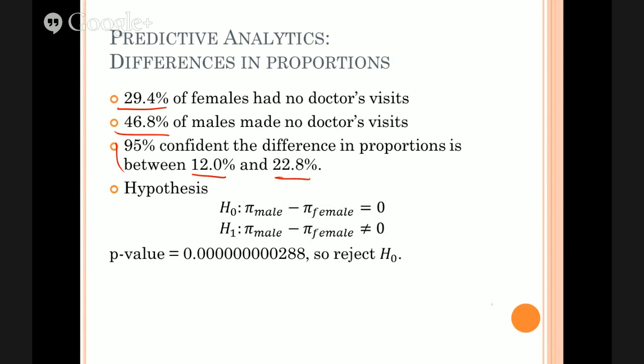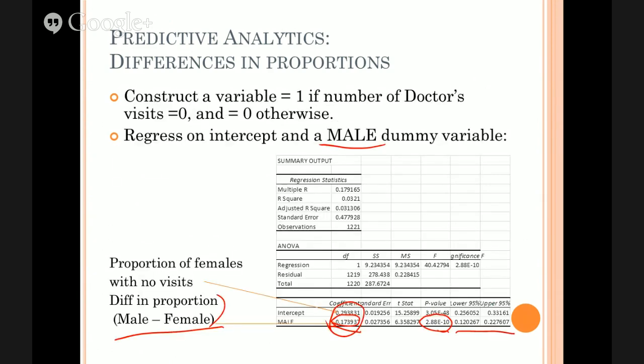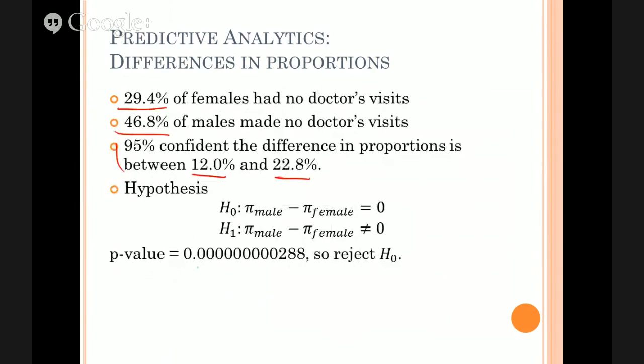So in terms of confidence intervals, we're 95% sure that the difference between men and women in terms of proportion of times they never go to the doctor is between 12 and 20 point 2.8%. The 12% 22.8% when you round it off. So we're pretty sure it's not zero. We're pretty sure it's very big positive. In other words, men never go to had no visit doctors visits far more often than women. That's what that tells us somewhere between 12 and 23%. The hypothesis test, this number here is 2.88 times 10 to the minus 10, which is this thing here. If you've got, 10 zeros in there or some thereabouts. So that's a very small P value.